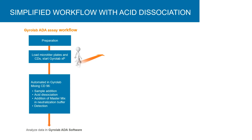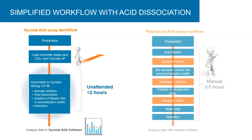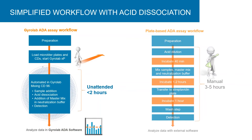Gyrolab immunoassay workflows limit hands-on time, including the brief time needed for the preparation of samples in the microtiter plate. The plate is then loaded on the Gyrolab system with the immunoassay and detection fully automated. The run is completed in under two hours compared to the three to five-hour plate-based method where manual operations are performed in six separate steps.